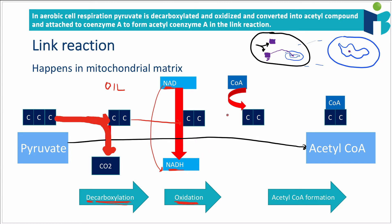The final step is that the two-carbon molecule, now oxidized, gains a molecule called coenzyme A — you can just call it CoA. Adding CoA to the two-carbon molecule forms acetyl-CoA, which is the product of the link reaction. Cell respiration is relatively straightforward because it's just a series of steps — glycolysis, the link reaction, the Krebs cycle — and you just have to remember the key terms describing what happens to the molecule. In this case, those are decarboxylation and oxidation.